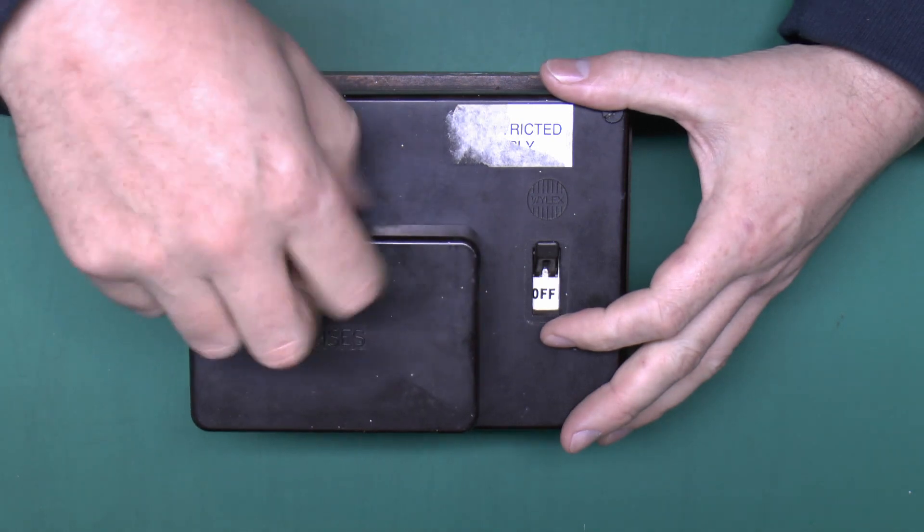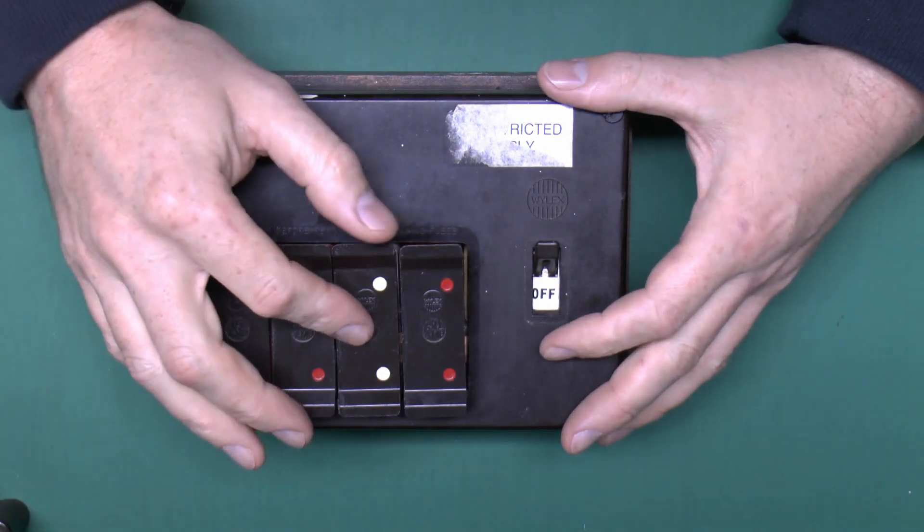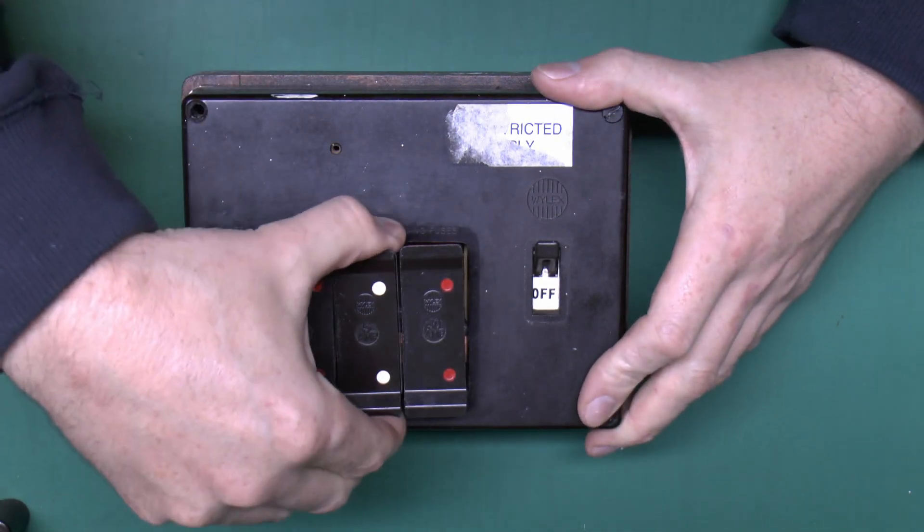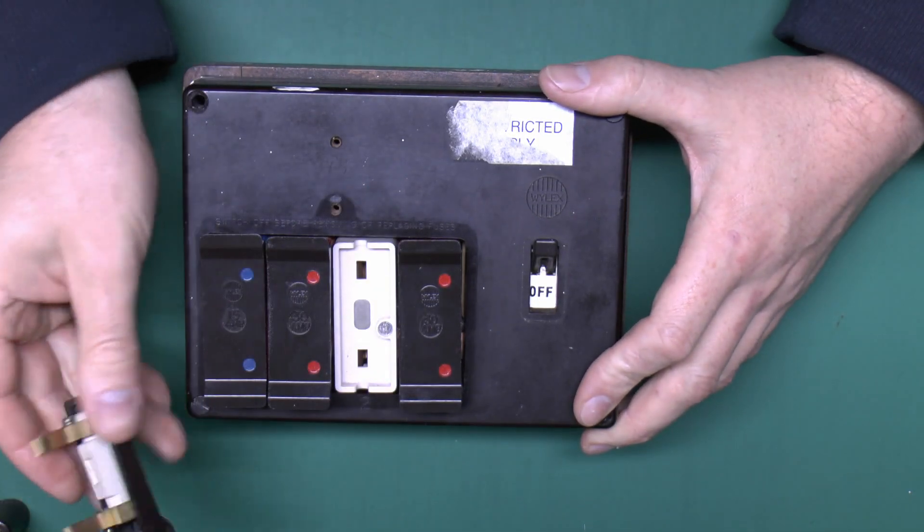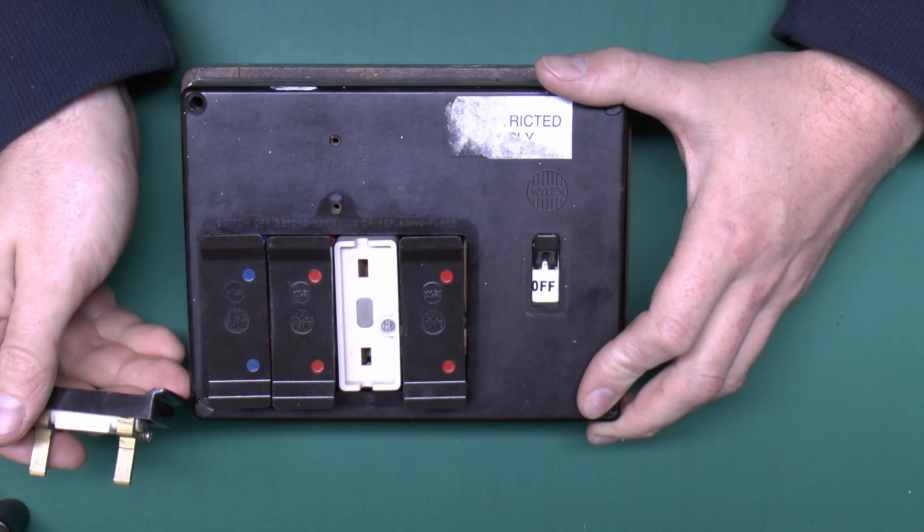If the fuse does blow again straight away, then that indicates there's some other faults still on the circuit. So before replacing it a second time, you'll need to obviously find out what that fault is and clear that and make obviously necessary repairs.